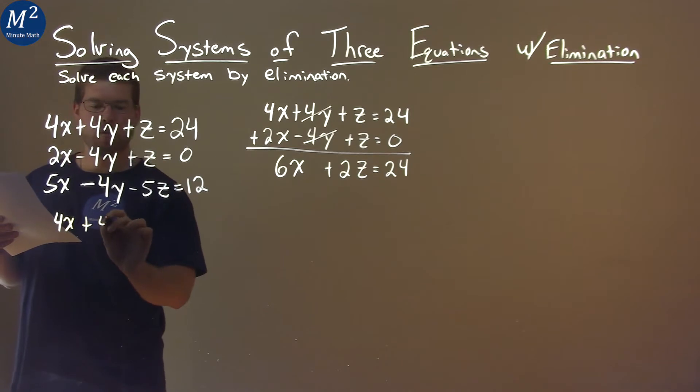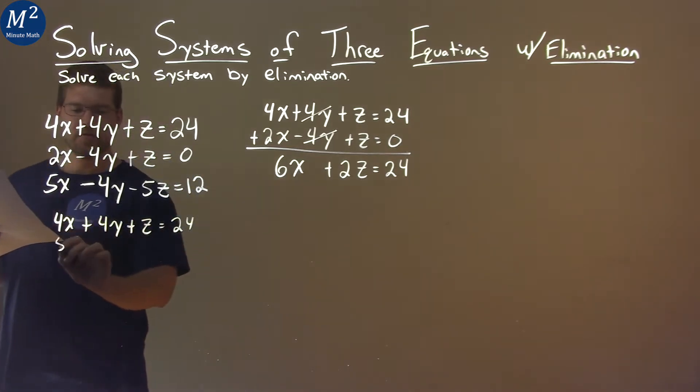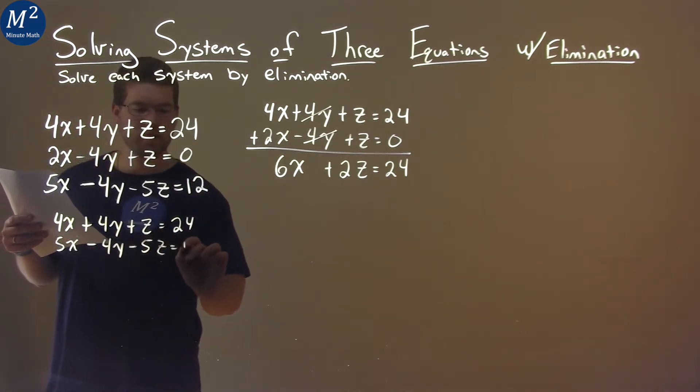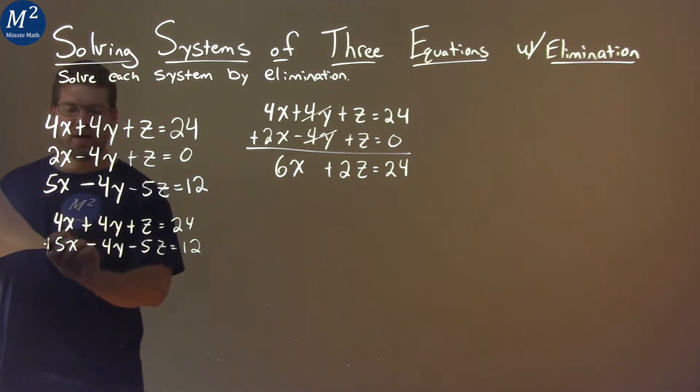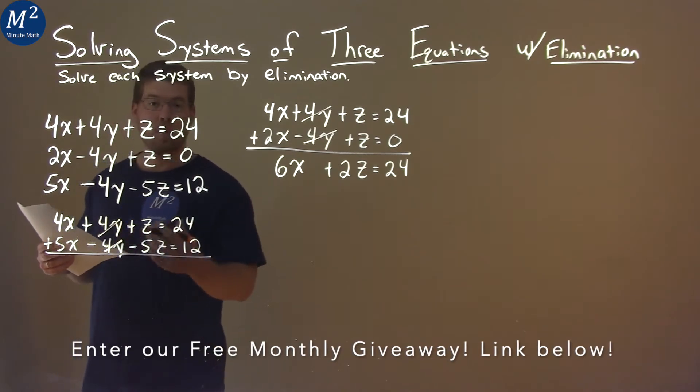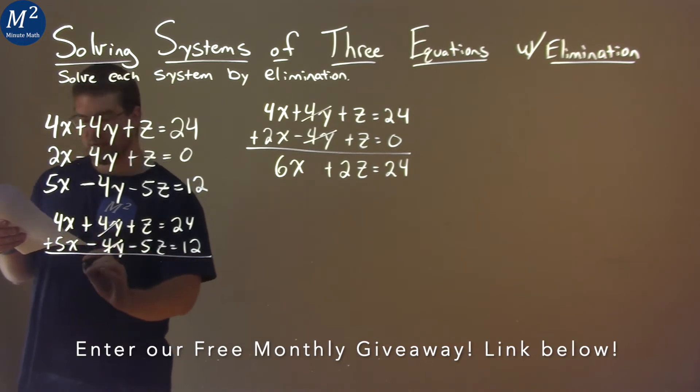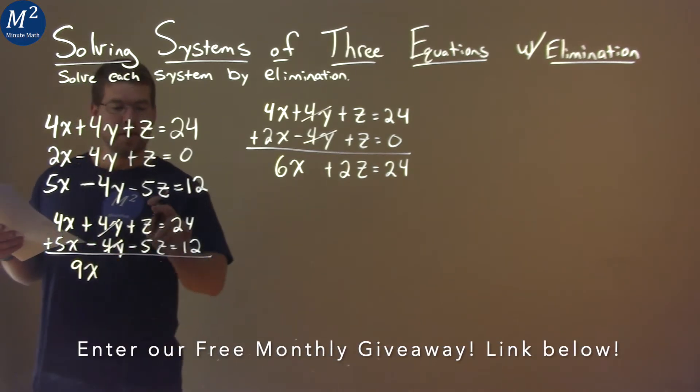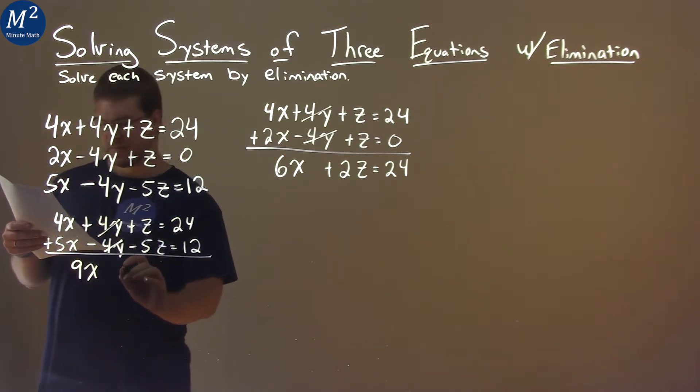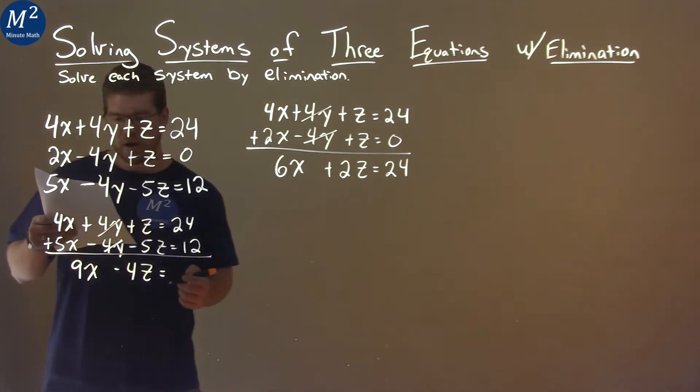4x plus 4y plus z equals 24. And the last equation, 5x minus 4y minus 5z equals 12. I add these two equations together and look what eliminates, again, the y. And that was by design. That's why we chose these two equations. Add it together. 4x plus 5x is 9x. z plus a negative 5z is negative 4z. And 24 plus 12 is 36.